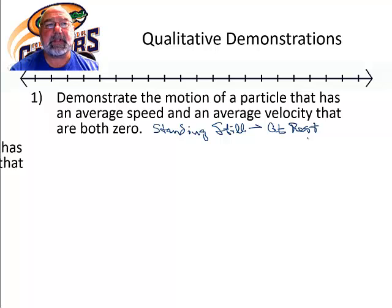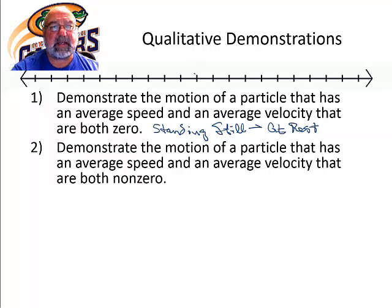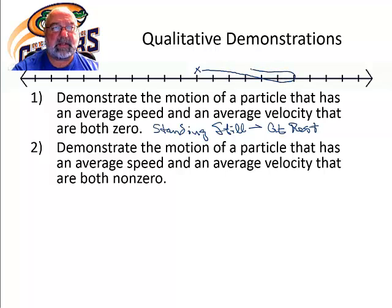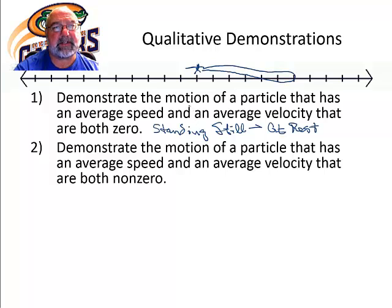Let's see the next one. Demonstrate the motion of a particle that has an average speed and an average velocity that are both non-zero. That means the object is moving and has a non-zero displacement. So if we start here and go to the right and then return back to our starting point, that would give us an average speed that's non-zero, but it would not give us an average velocity that is non-zero, because we have no displacement.